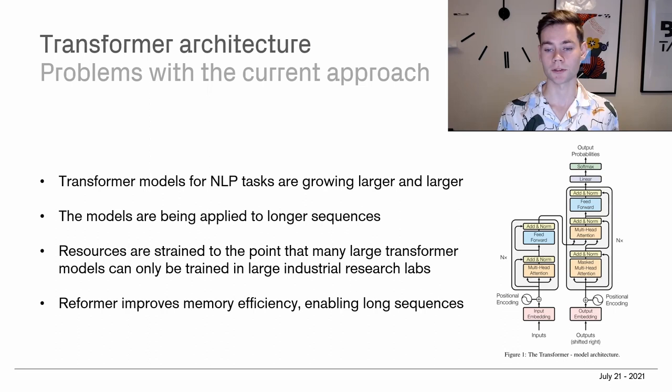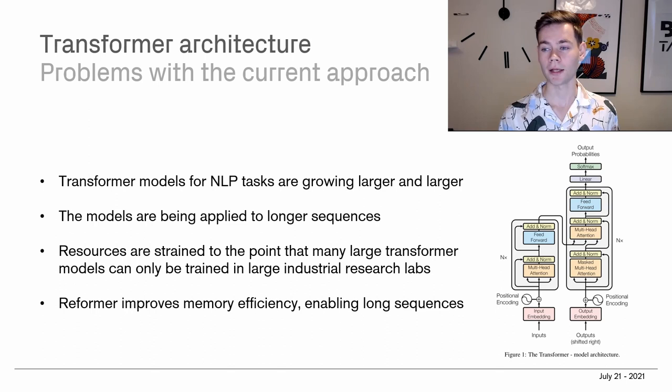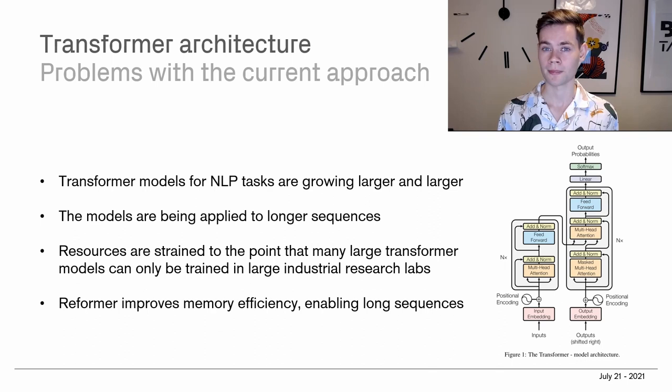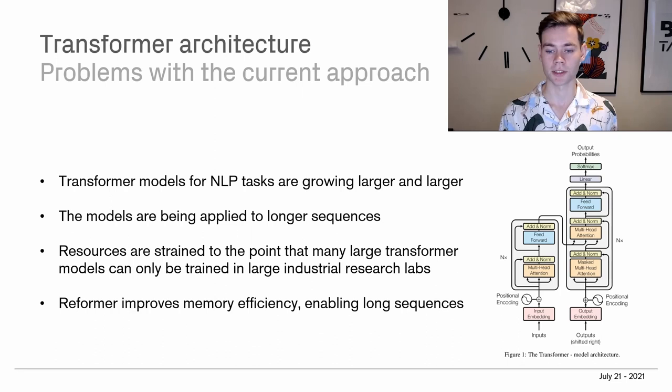Basically, these models are growing larger and larger, and the sequences we want to apply them to are also growing bigger. For example, you might want to input an entire text and analyze it in your model. With the BERT architecture, it has something like 512 inputs as a maximum in terms of characters, and you can easily imagine applications when you need significantly longer texts fed into the network. Another problem is that training these networks is highly limited — you can really only train these models in large industrial research labs.